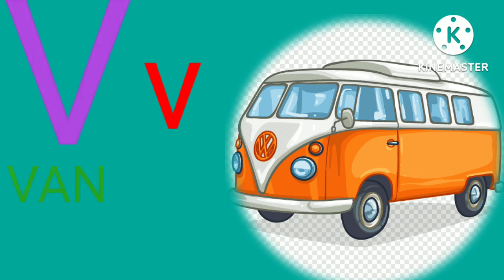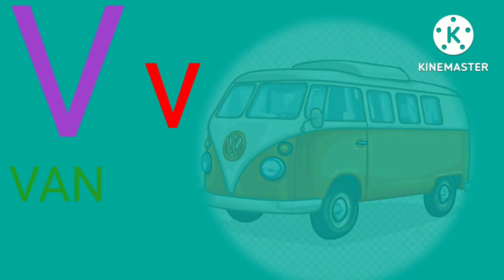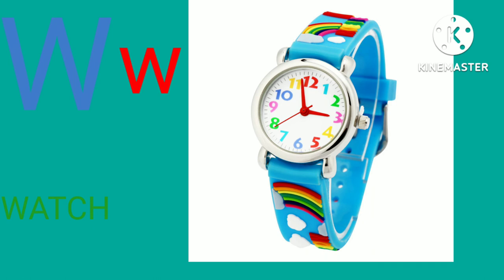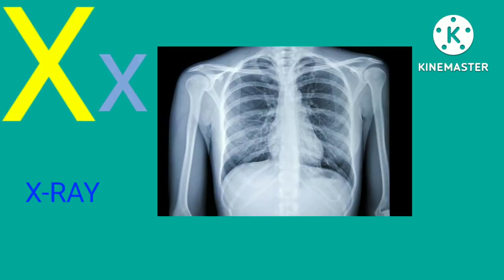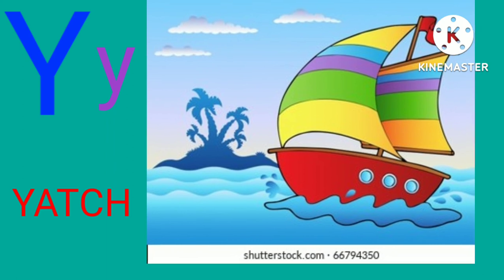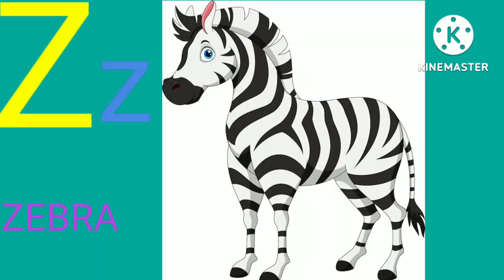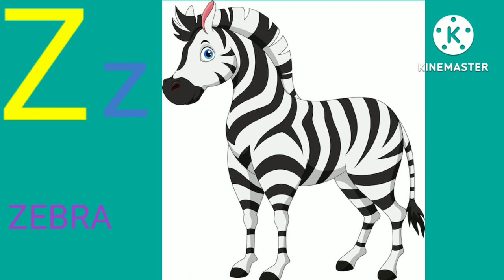V for van, W for watch, X for x-ray, Y for watch, J for zebra.